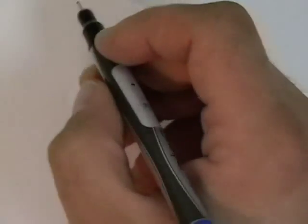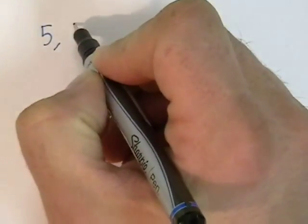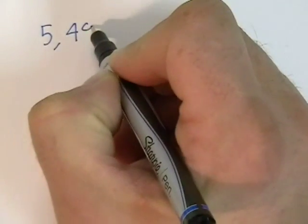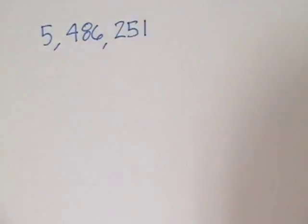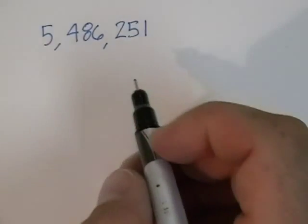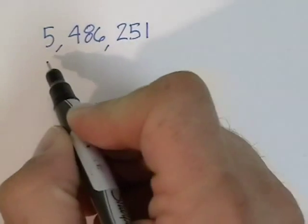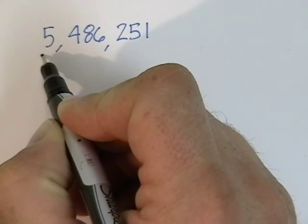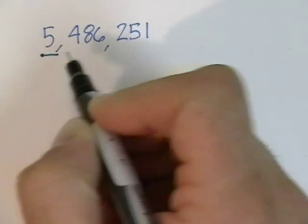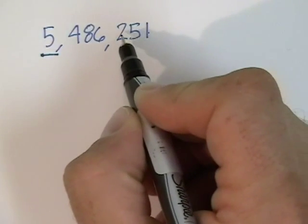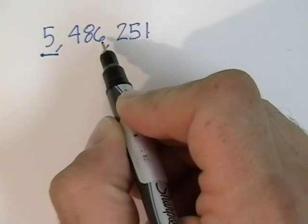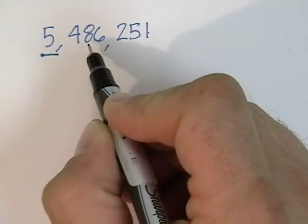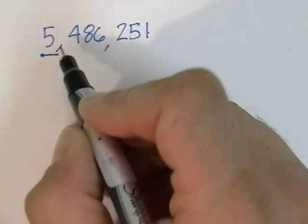This number again: 5,486,251. This time, let's round it to the nearest million. So we find the millions place, counting over: ones, tens, hundreds, thousands, ten-thousandths, hundred-thousandths, millions.